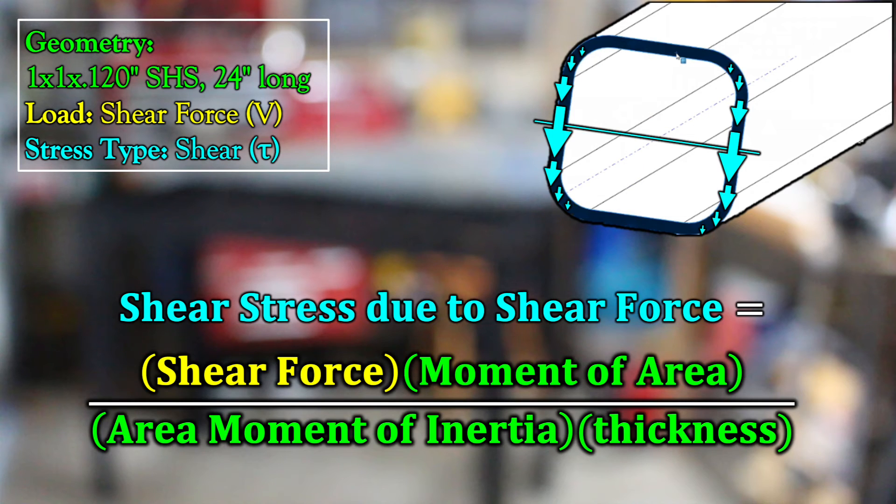And the reactionary shear force is commonly denoted with a capital V, not to be confused with shear stress commonly denoted as tau. Now shear stress due to a shear force is that shear force multiplied by a geometric parameter called the moment of area divided by the same area moment of inertia as before multiplied by the thickness, not the wall thickness, but the total thickness through which the force travels. Symbolically, that's tau equals VQ over IT.